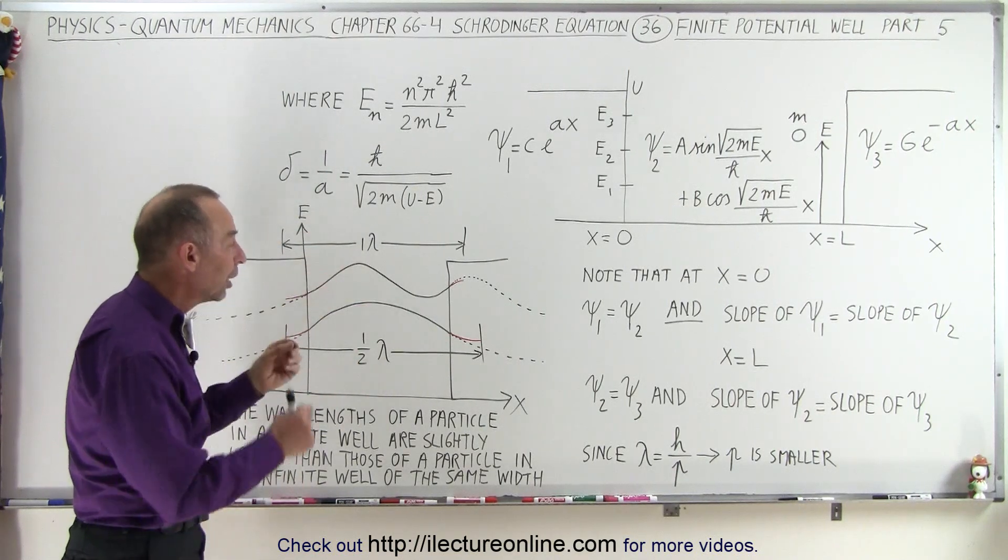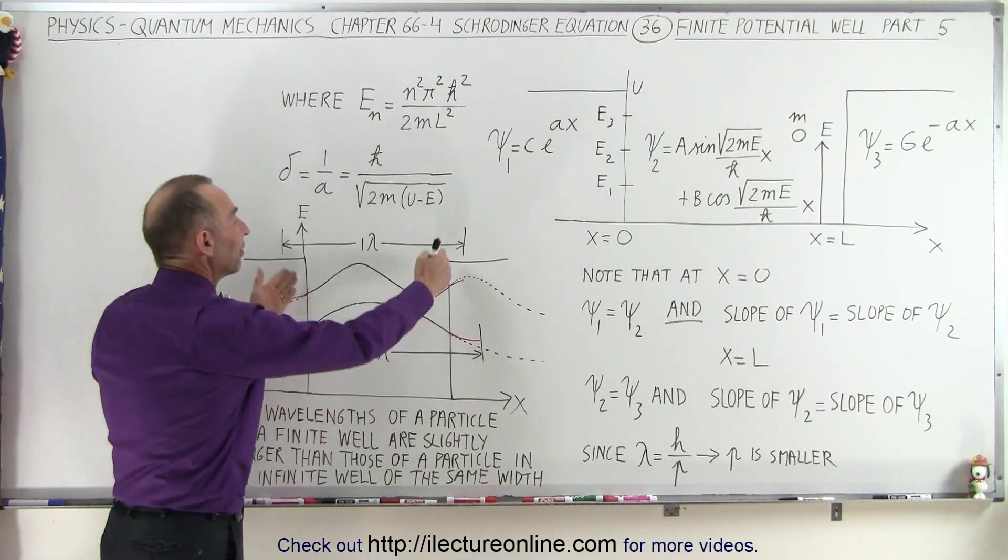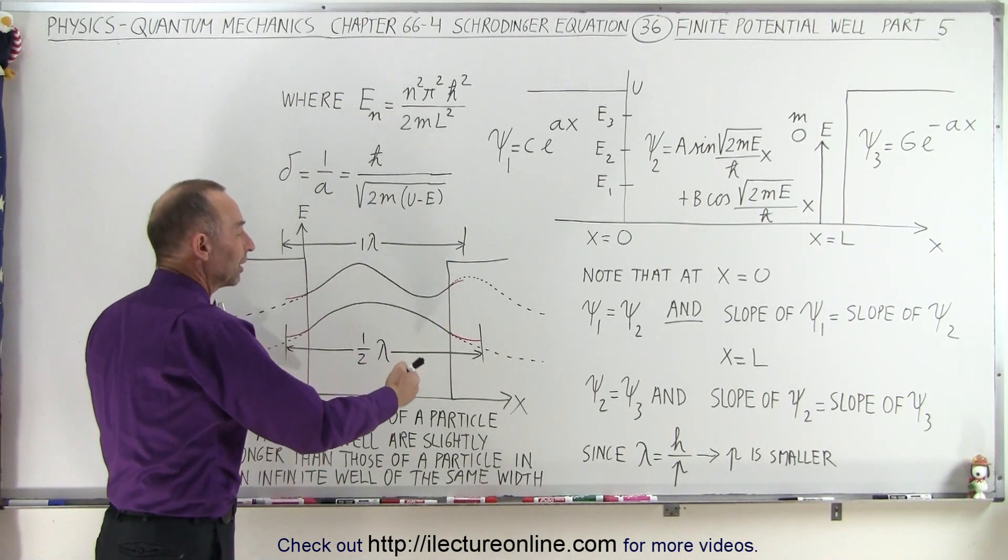So for energy level 1, energy level 2, energy level 3, the momentum will be slightly smaller for a particle inside a finite well compared to a particle in an infinite well of the same width.